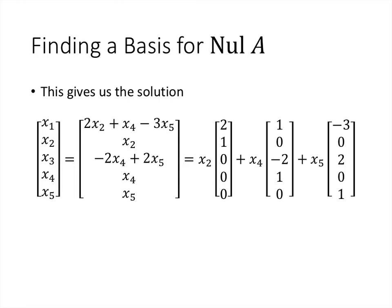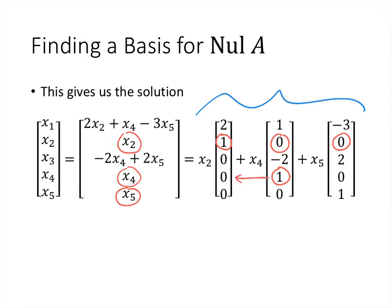Those three vectors span the null space — every vector in the null space of A looks like this, so every vector is in the span of these three vectors. But those three vectors are also linearly independent. Every time we use this process to find a spanning set for the null space, we get a basis. For each free variable we get one vector, and that vector has a 1 in a particular position where all the other vectors have zeros.